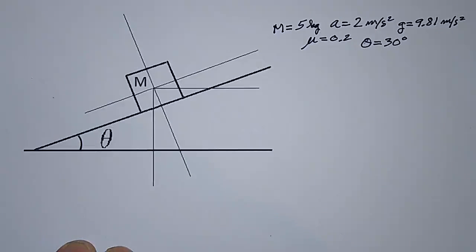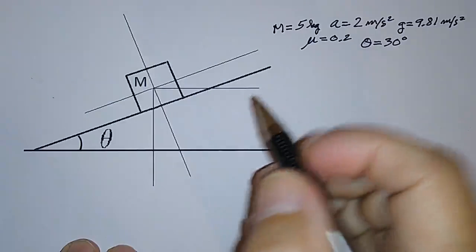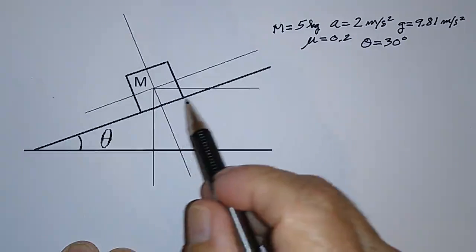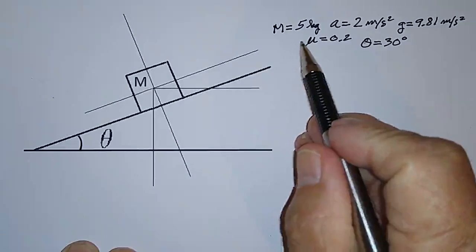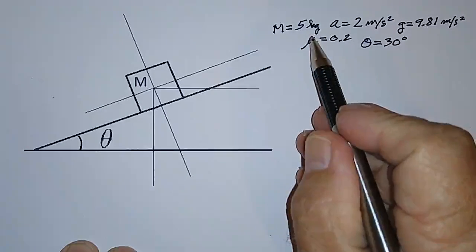Here's another dynamics problem that is somewhat instructive. Let's say that we have this mass M that's sitting on an inclined plane and there's friction.